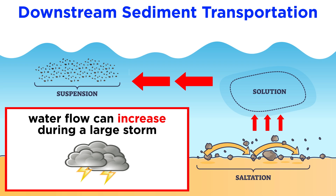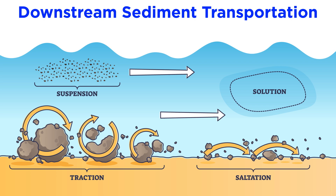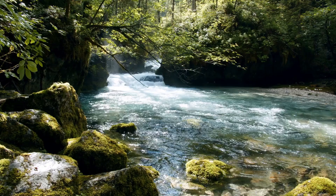If the stream velocity further increases, the saltating fine sand will become suspended in the stream, and the next coarsest material, medium sand, will begin to saltate. Later, when the storm is over and the flow wanes, the sand will stop moving and be deposited at the stream bottom in a new location further downstream. In high gradient streams, larger sediment like boulders are pushed or rolled downstream by the rapidly flowing water through a process called traction.